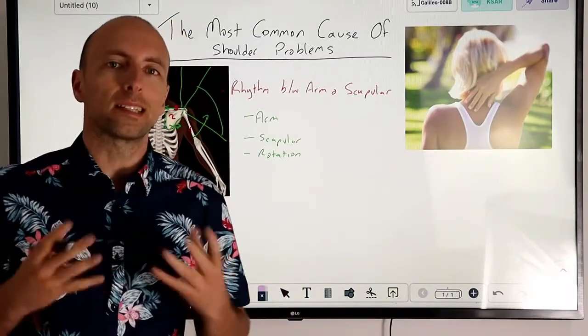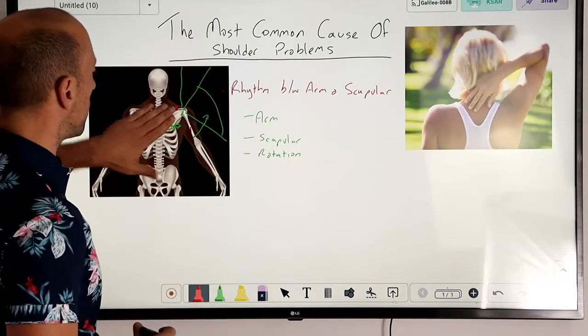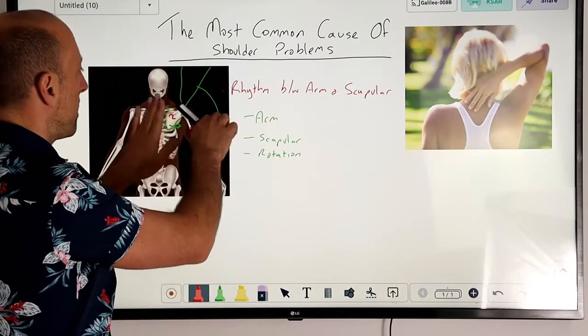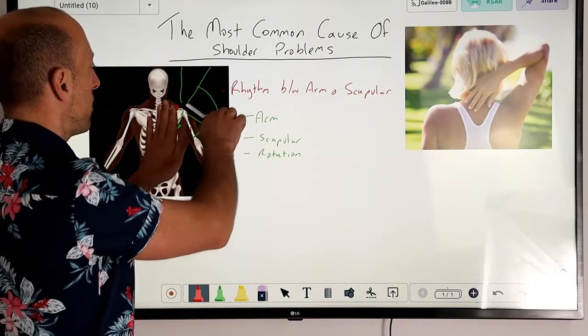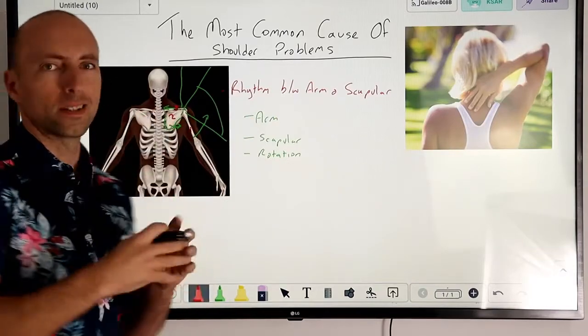It's a complex series of neurological actions because what needs to happen is initially the shoulder blade needs to stay still and the arm needs to move, then the muscles need to let the shoulder blade go and allow for movement of the shoulder blade.